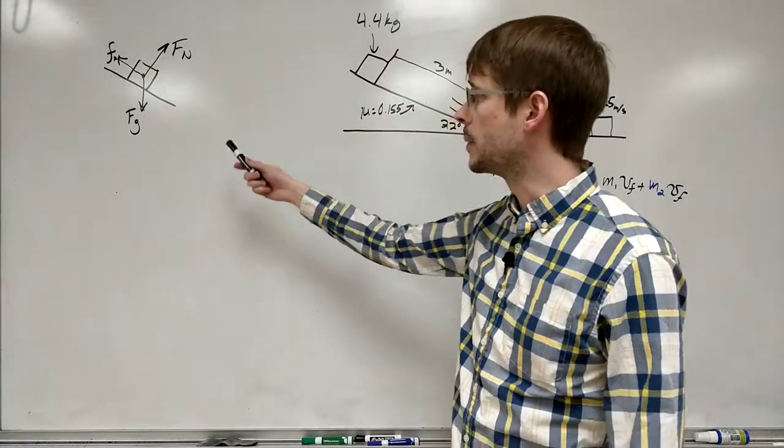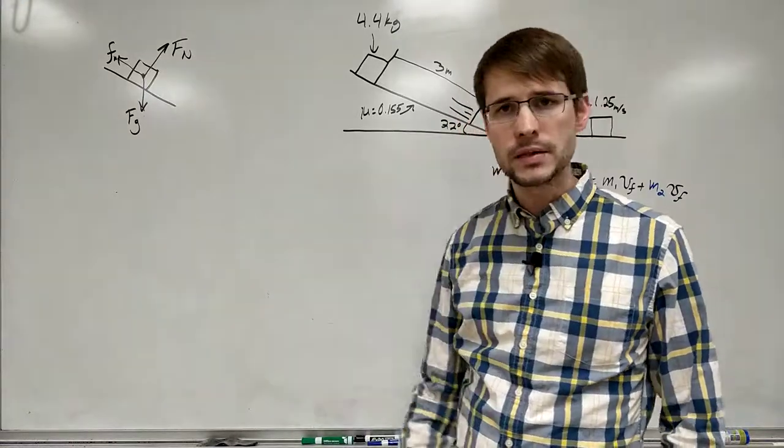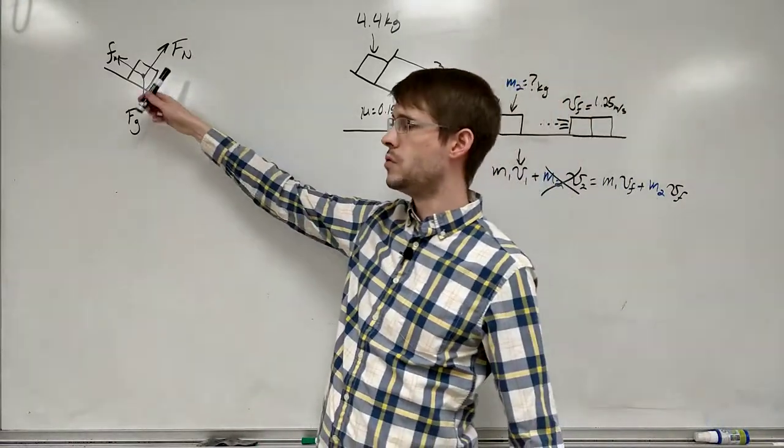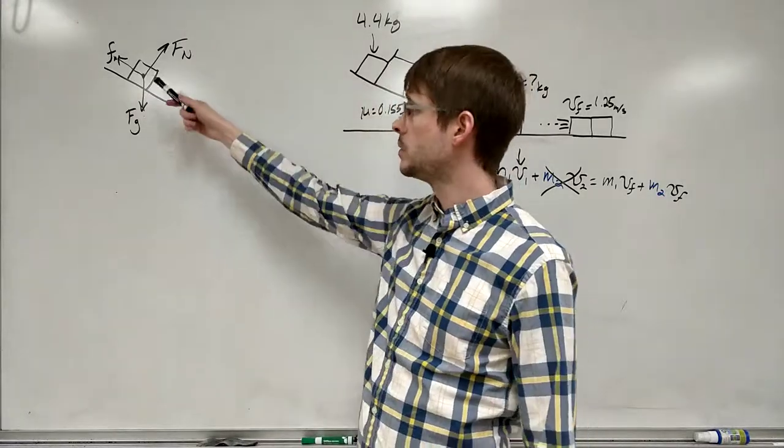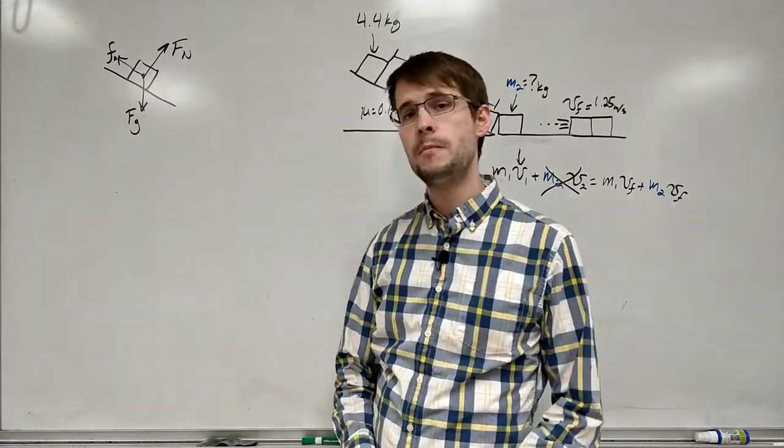So here's our force diagram. We've got gravity pointing straight down, normal force pointing normal to the surface, so perpendicular to the surface. We've got the friction force, which is pointing parallel to the surface.